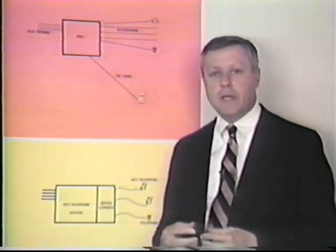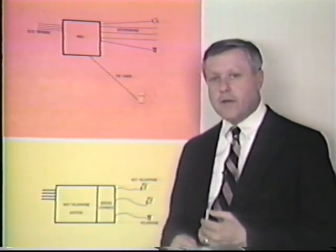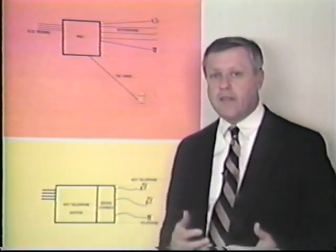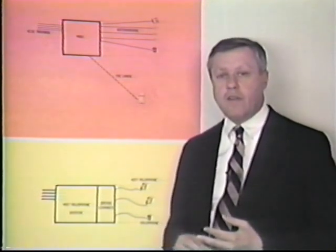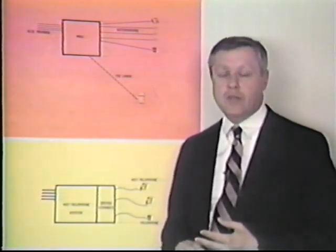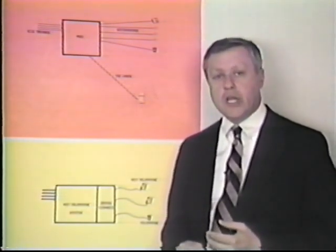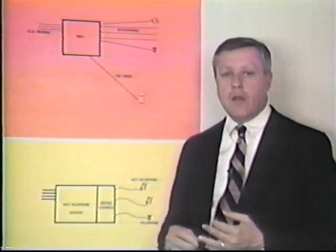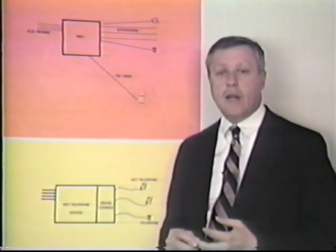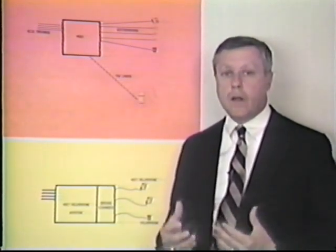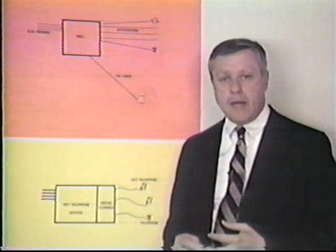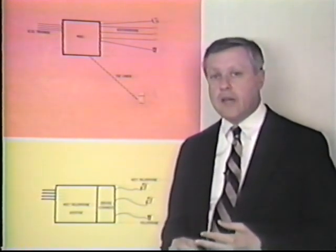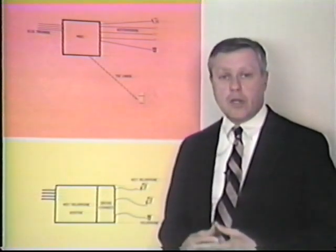Going into the differences between PBXs and key telephone systems, the first and main difference is size. Most key telephone systems are used in small offices — we're talking 10 to 15 people. PBXs start at about 50 lines or extensions and go up to 10,000 and more. In the key system, calls generally come in and ring on a specific station and usually cannot be transferred. In a PBX system, calls can be transferred to any station, and stations can talk to one another — in a key system, stations can only talk if they have a special intercom line.